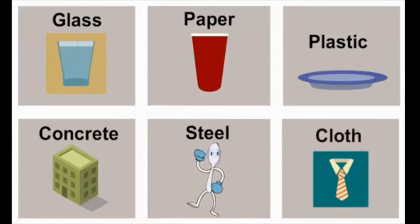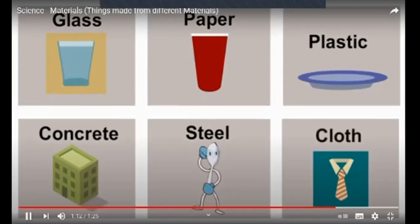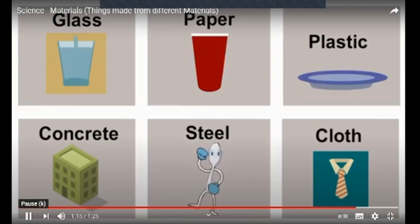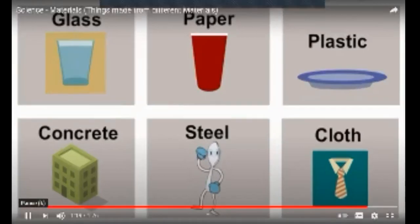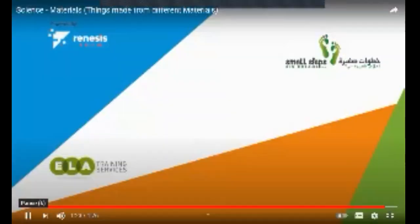And then a tie — a tie is made out of cloth. Your shirt, your pens, your dresses, and so many other things are also made out of cloth. So there are many other materials as well.